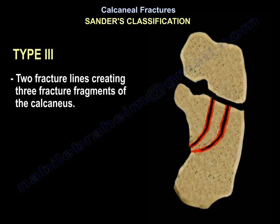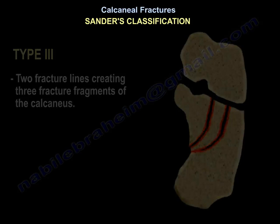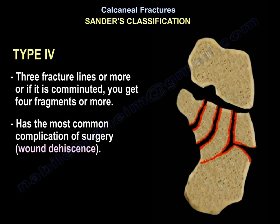If you have two fracture lines, you will get three fragments — that is type three. If you have three or more fracture lines, or if it is comminuted, you will get four or more fragments — that is type four. Type four has the most common surgical complication, which is wound dehiscence.